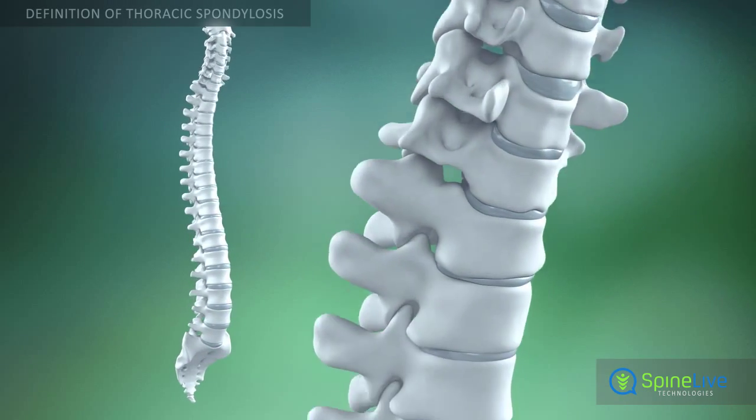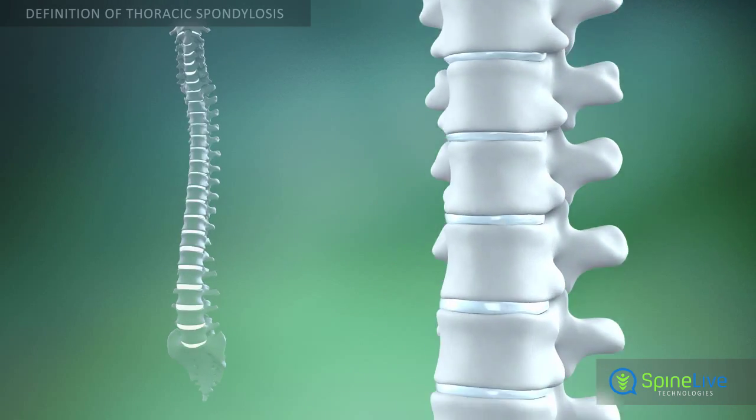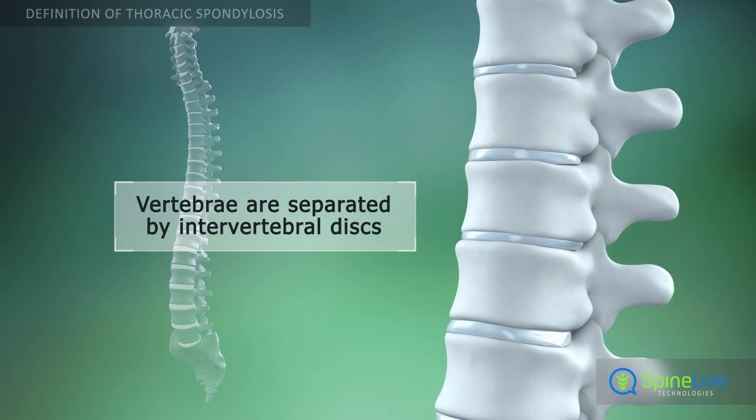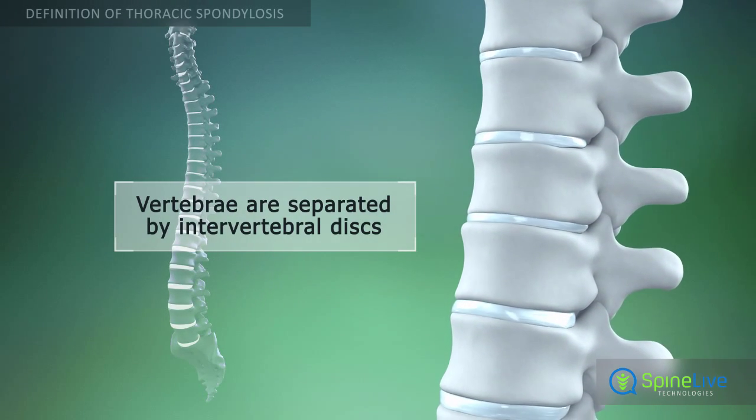The spine is made up of 33 individual bones called vertebrae. These are separated by intervertebral discs.